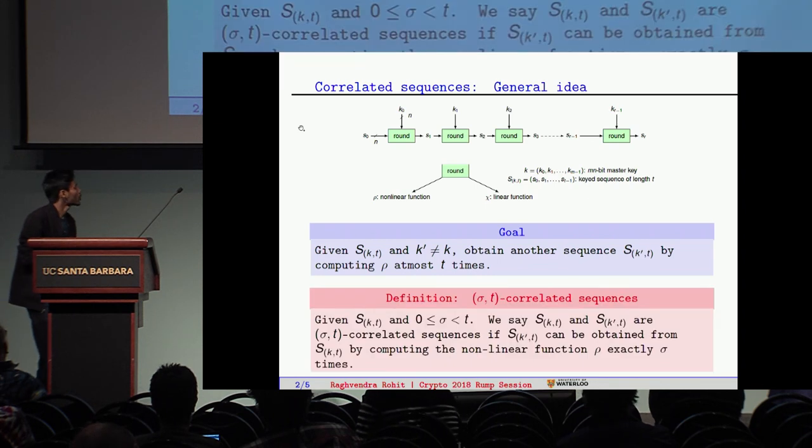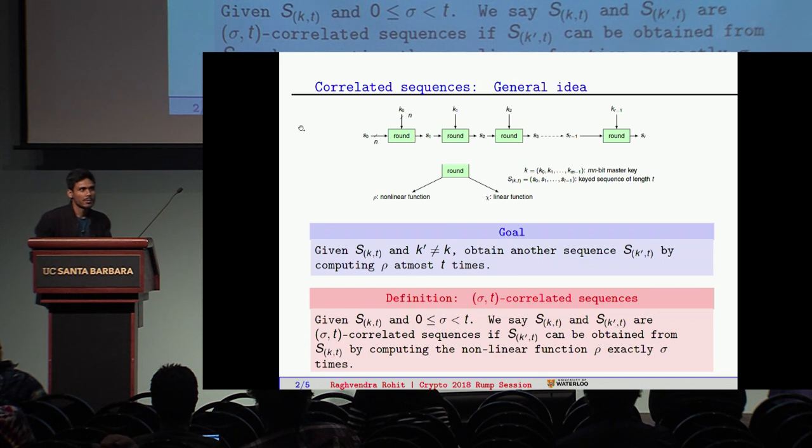More formally, we say two sequences are sigma T correlated if one can be obtained from another by computing the nonlinear function exactly sigma times.